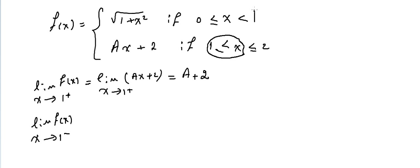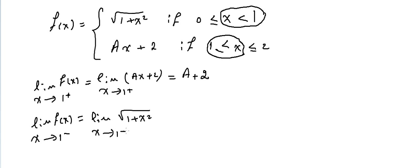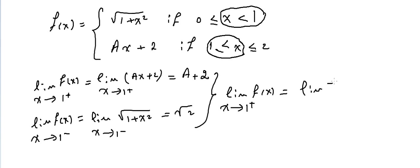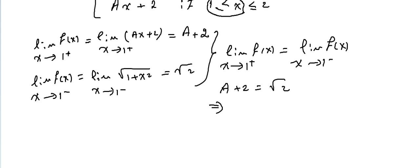The limit of f(X) as X approaches 1 from the left uses the piece where X is less than 1, which is the square root of (1 plus X squared). Substituting X equals 1 gives the square root of (1 plus 1), which is the square root of 2. For the limit to exist, we need a plus 2 to equal the square root of 2, so a equals the square root of 2 minus 2.